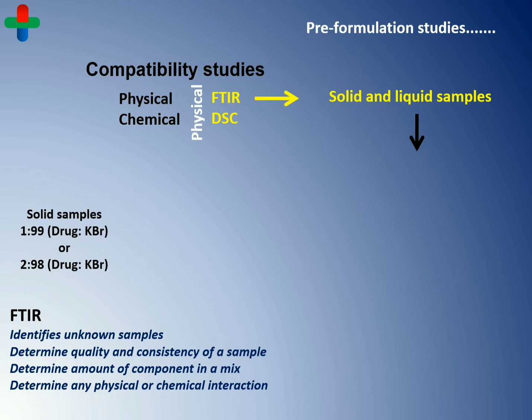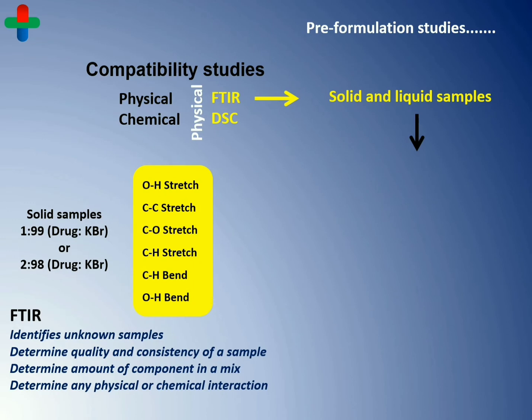Both solid as well as liquid samples of the drug are used to determine the spectra. For this purpose, drug and KBr are used in 1:99 and 2:98 ratios and mixed well with the help of an agate pestle and mortar. This mixture is then converted into a thin pellet using a hydraulic pressure piston and used for investigation. The spectra of the drug give information in terms of OH stretching, CC stretching, CO stretching, CH stretching, CH bending, OH bending, and so on.